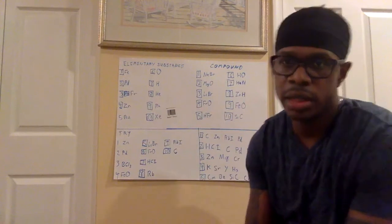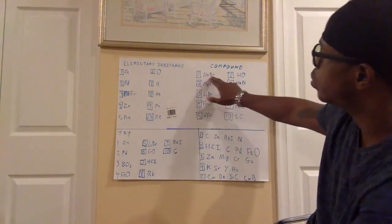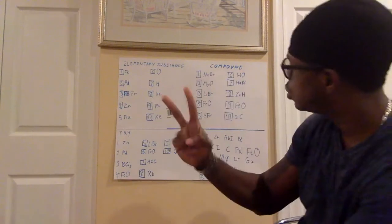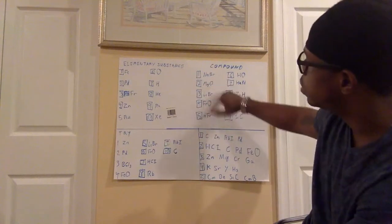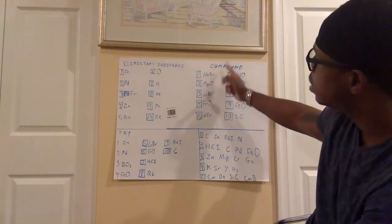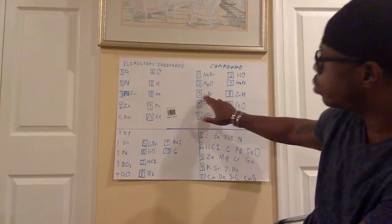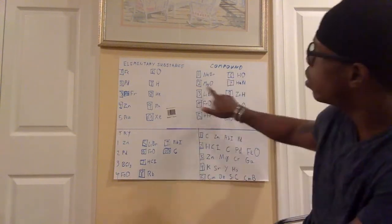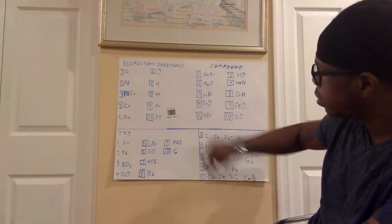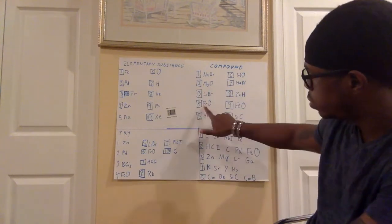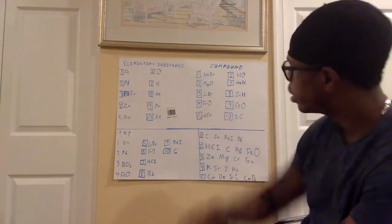We're back. Number one, NaBr — two separate atoms. Number two, MgO — magnesium is one, O is one — two different atoms. Number three, LiBr — LI is one atom, Br is one — two atoms. Number four, FrO — Fr is capital and common, so that's one atom, and O is oxygen, which is one atom by itself — two atoms.